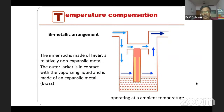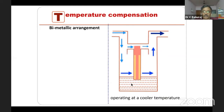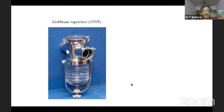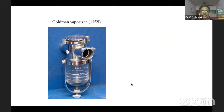In Vapor 19/20, the mechanism is slightly different. The inner rod is made of Invar — a relatively non-expansive metal — and the outer jacket is in contact with the vaporized liquid and is made of brass. When vaporization occurs, temperature of the liquid goes down. The rod moves up, providing resistance to flow through the bypass chamber, diverting gas through the vaporization chamber — again temperature compensation by flow alteration.